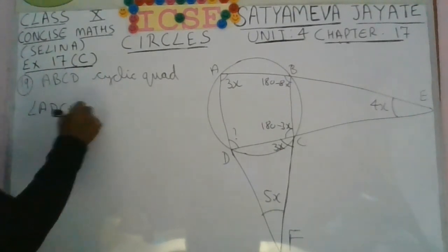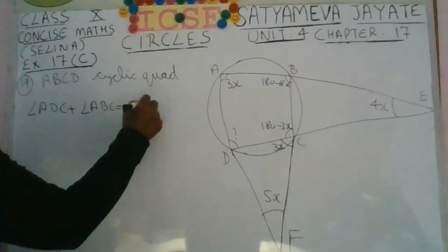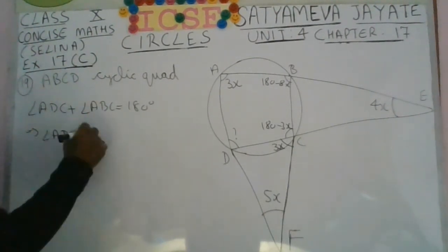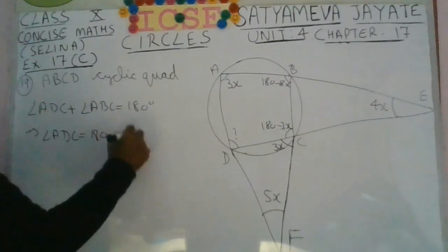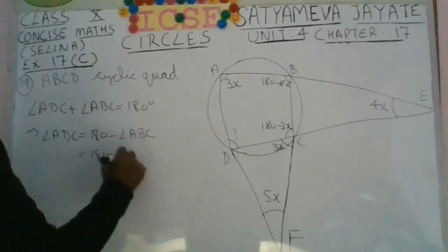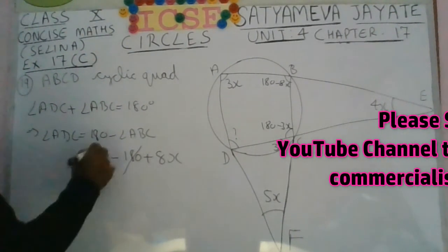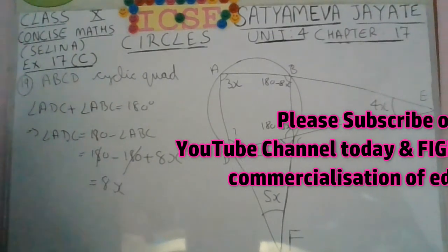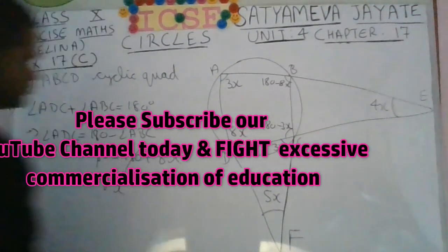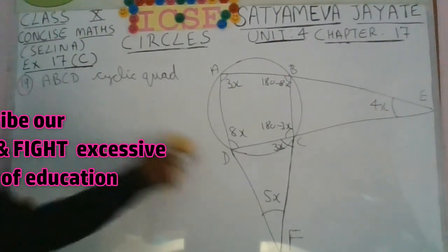Again, using the cyclic property: angle ABC plus angle CDA equals 180 degrees. Angle ABC is 180 minus 8x, so angle ADC equals 180 minus (180 minus 8x), which equals 8x degrees.